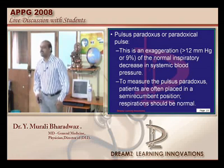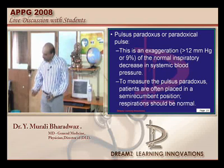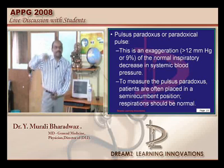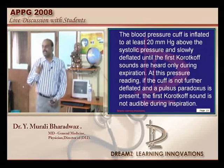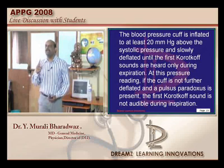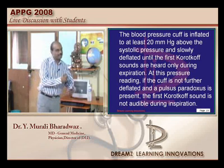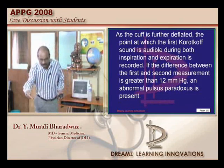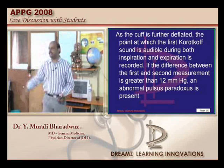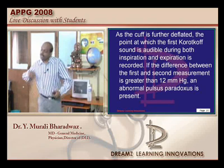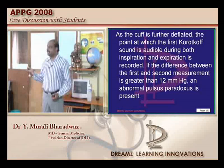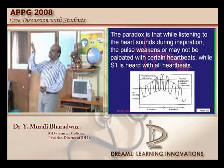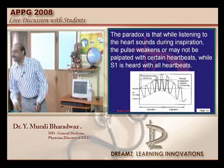Why? Because whenever we have an inspiration, there is a negative intrathoracic pressure and more blood enters into the right side of the heart. Venous sucking occurs into the right side due to negative intrathoracic pressure. This pushes the interventricular septum and impedes the left ventricular outflow, decreasing left ventricular output, leading to a fall in systolic BP. In pulsus paradoxus it is not the reverse — it is the same thing, but exaggerated.